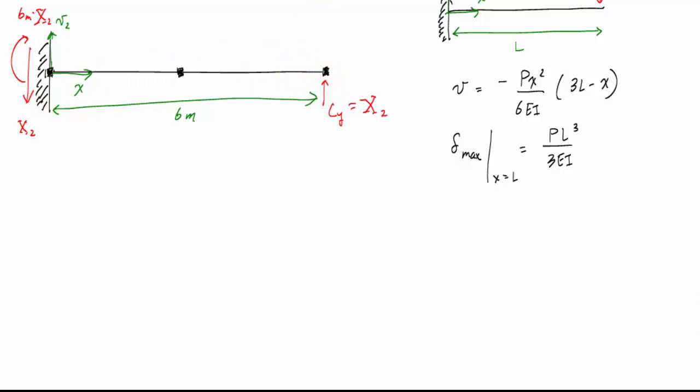So the thing I want to do is I'm just going to plug and chug. I'm going to use this relationship here. Instead of P I have to put, because my concentrated load is pointing up whereas this equation was for a concentrated load pointing down, I've got to substitute for P a negative x2 and a negative times a negative makes it positive. So I have capital X2 positive in this case 3 meters squared times 3 times 6 meters minus at x of 3 meters.